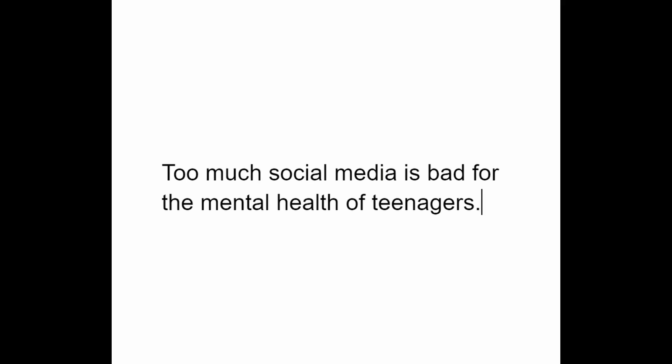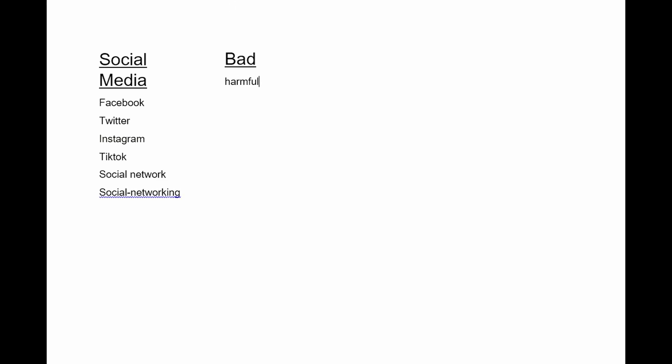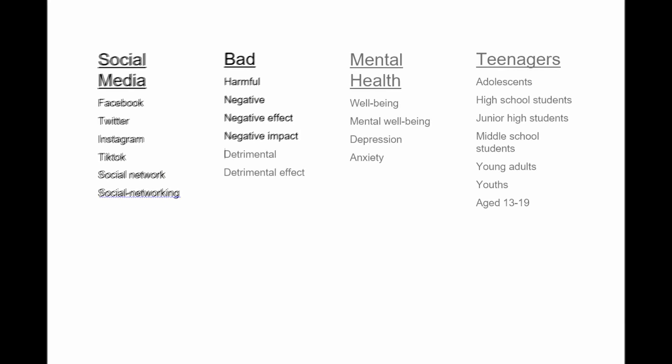Now go back and underline words in the sentence that are the main concepts. You should have at least two and probably not more than four. Make a column for each of the major concepts in your research sentence. Set a timer on your phone for five minutes and begin brainstorming synonyms for each of these concepts. Try to imagine words that someone else might use when writing about these subjects. When you're done you'll have something that looks like this.